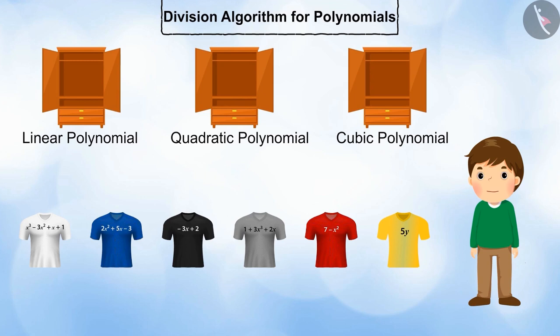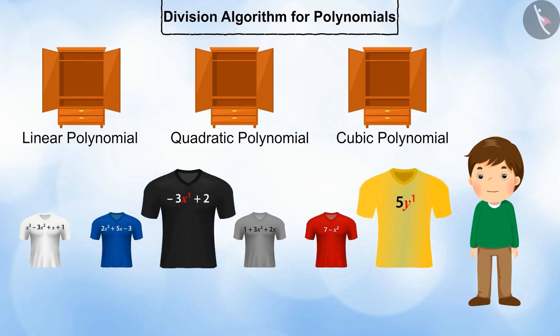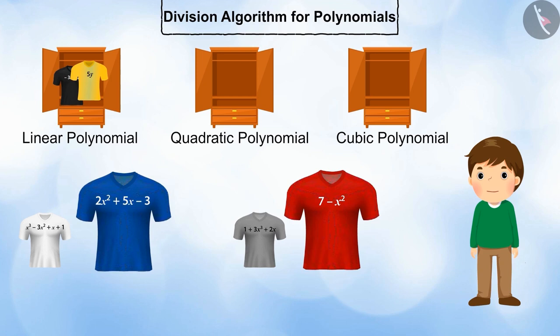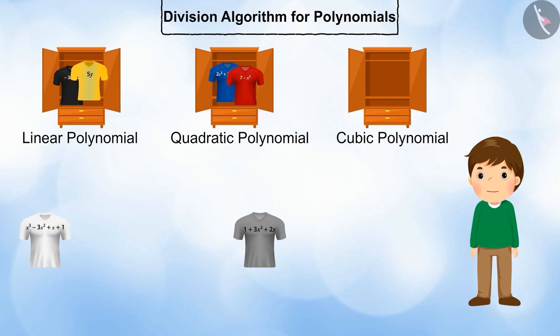You can see that the highest power of these polynomials is 1. So, these t-shirts will go into the linear polynomial wardrobe. The red and blue t-shirts will go into the quadratic polynomial wardrobe, as the highest power of these polynomials is 2.